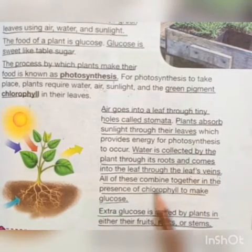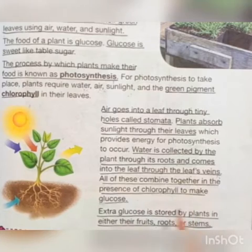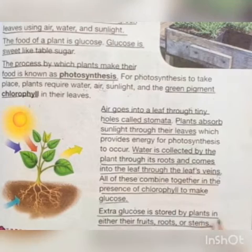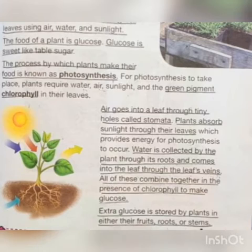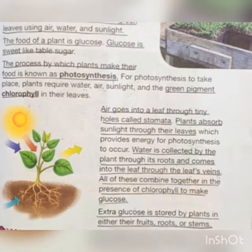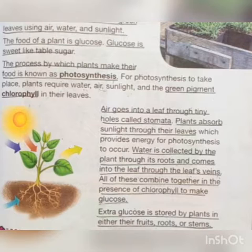All of these combine together in the presence of chlorophyll to make glucose. Extra glucose is stored by plants in either their fruits, roots, or stems.